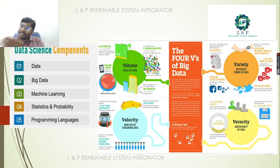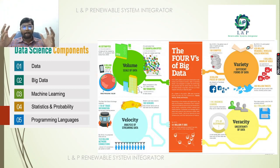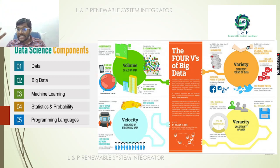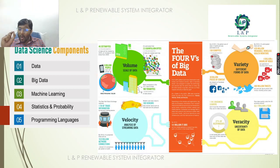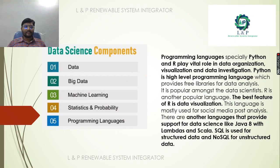The third V is Velocity — the analysis of streaming data. For example, 18 billion network connections, one terabyte of trade information, or 100 sensors. The fourth V is Veracity — the uncertainty of data. If data is not properly handled and quality is reduced, there is a possibility for business to suffer. This means data handling plays a very important role.